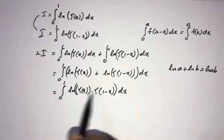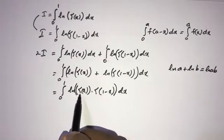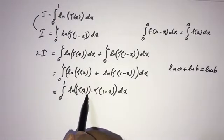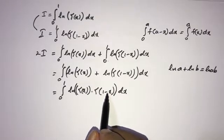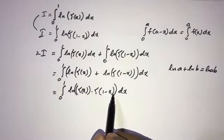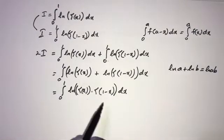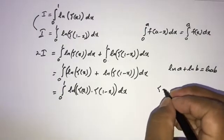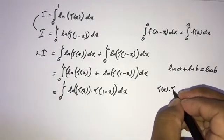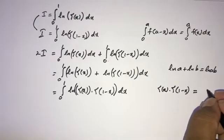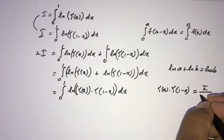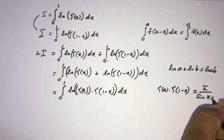This is familiar to us because we can use Euler's reflection formula. We know that gamma(x) times gamma(1 minus x) is equal to pi over sin(pi x).